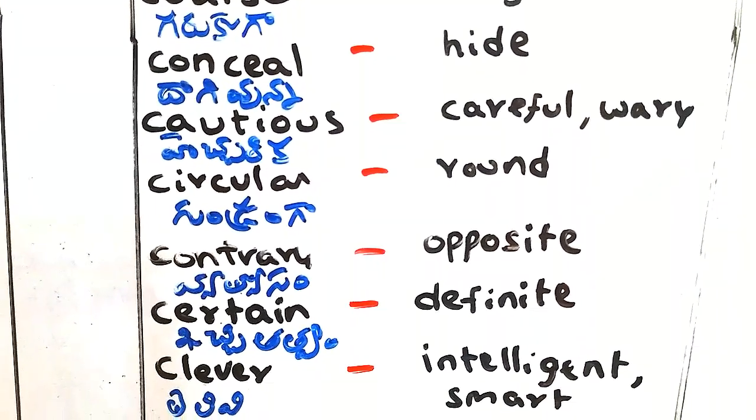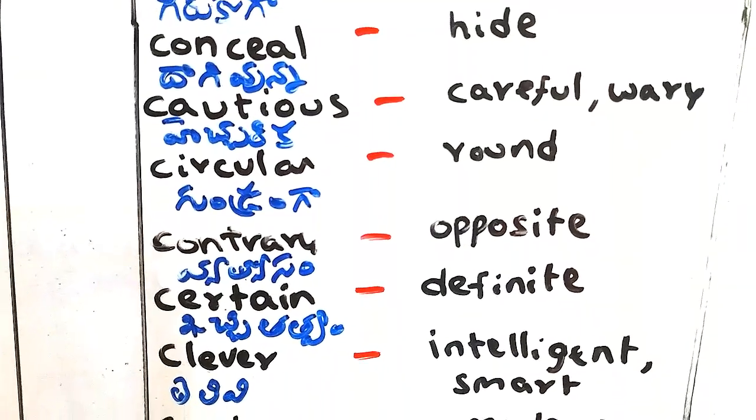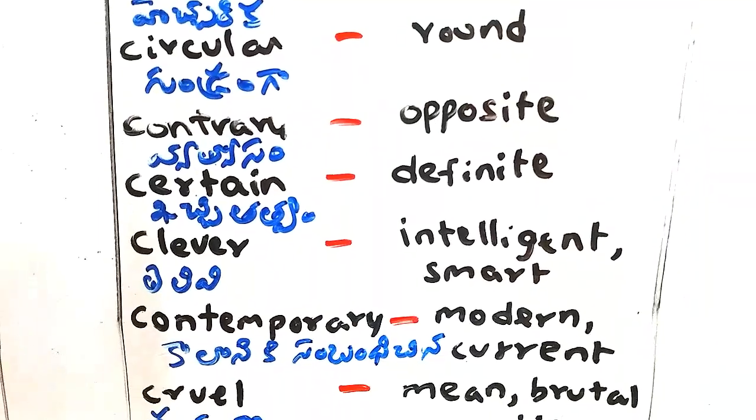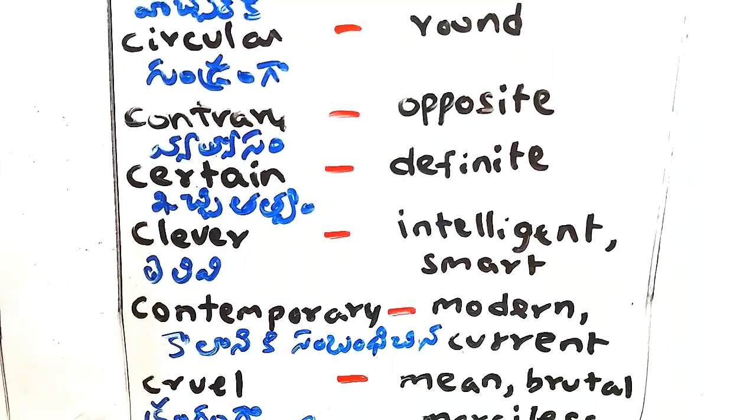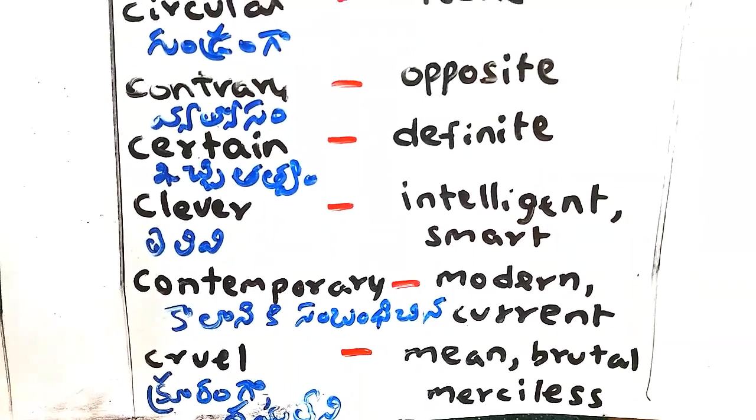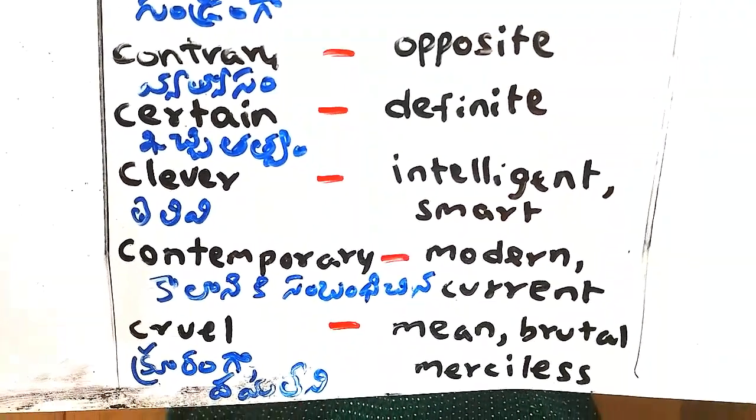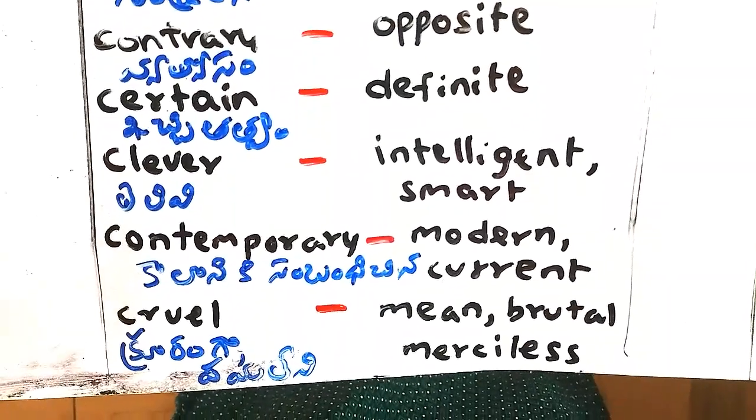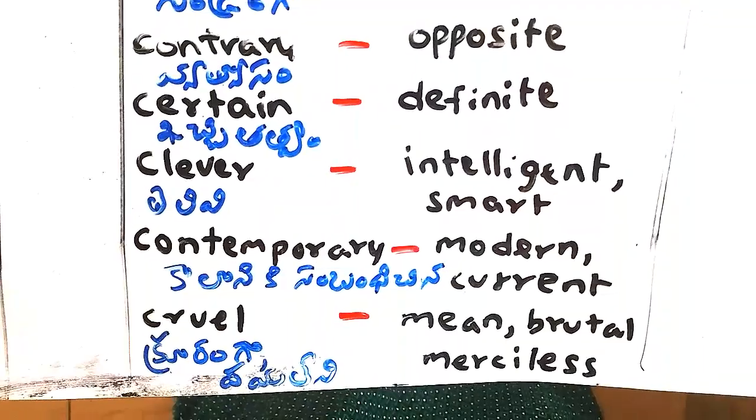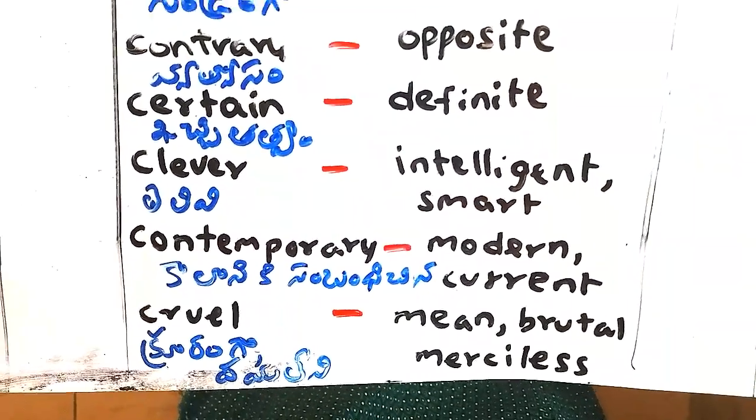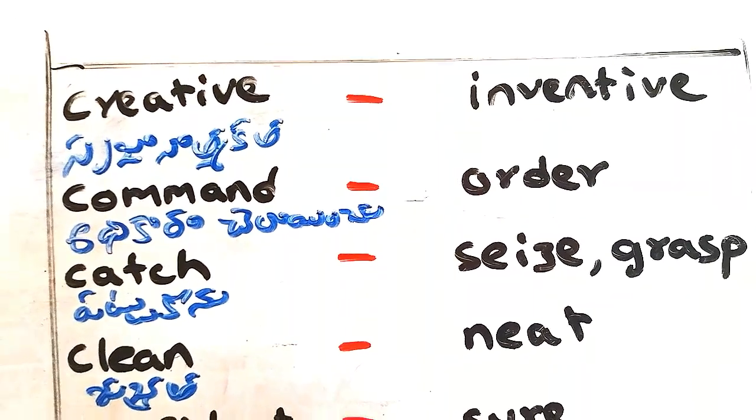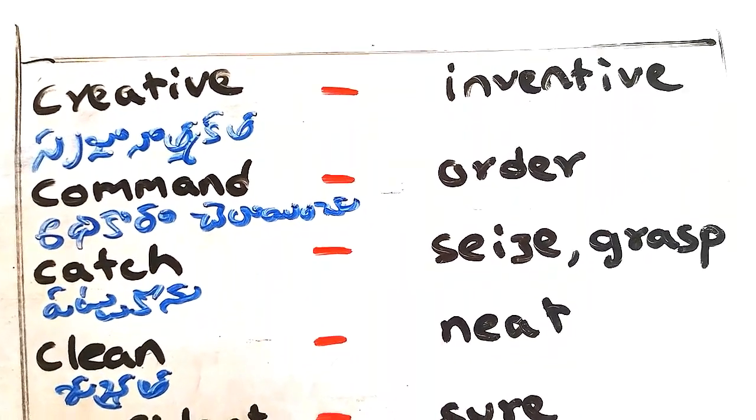Circular - gundranga, round. Contrary - vethyasham, opposite. Certain - kachitathwam, definite. Clever - televi, intelligent or smart. Contemporary - calonings, modern, current. Cruel - krooranga, mean, brutal, merciless. Creative - surinatmakata, inventive.